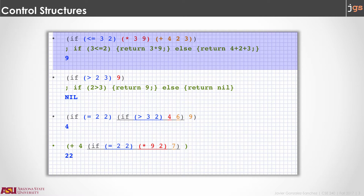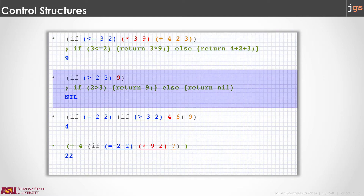What is going to happen is that the result of the function being executed — multiplication or addition in this case — is going to be returned as the value of the full line. So if you run this line, what you are going to have as a result is the number 9. The reason is because the condition is false, so the function with the plus symbol is going to be executed: 4 plus 2 plus 3 equals 9.